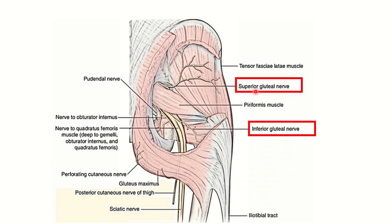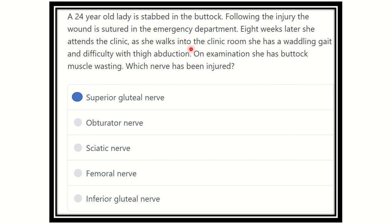The superior gluteal nerve is injured in this female patient who was stabbed in the hip area, causing injury to the superior gluteal nerve. This results in paralysis and wasting of the gluteus medius muscle. Therefore, our final answer is the superior gluteal nerve. Superior gluteal nerve injury results in waddling gait, difficulty in thigh abduction, and buttock muscle wasting.